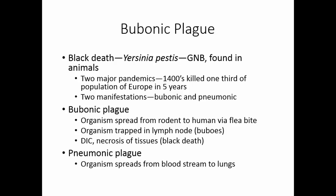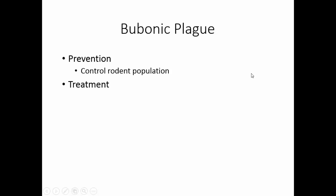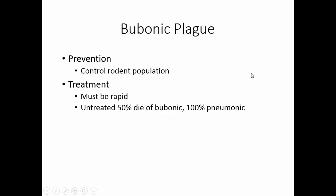In pneumonic plague, the organism spreads from the bloodstream to the lungs and can then be spread human to human via the air, rapidly damaging the lungs. Normally the organism stays in the animal population, transmitted animal to animal by fleas. If a flea bites a human, or if there is direct contact with the animal, the organism enters the bloodstream, the lymph node becomes infected, and you get the bubo. If the organism gets into the lungs, we have airborne pneumonic plague. Prevention is controlling the rodent population. If untreated, about 50% die of bubonic plague and 100% die of pneumonic plague. Streptomycin and gentamicin are effective treatments.